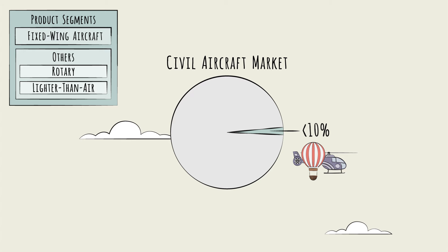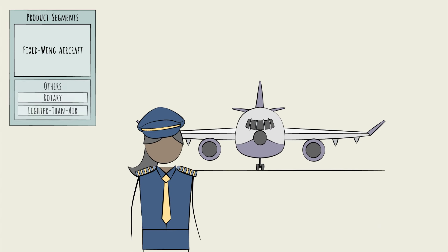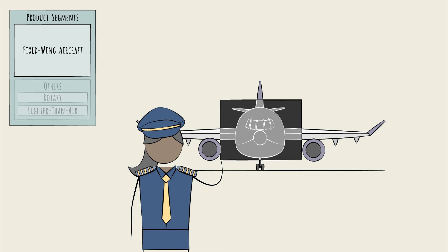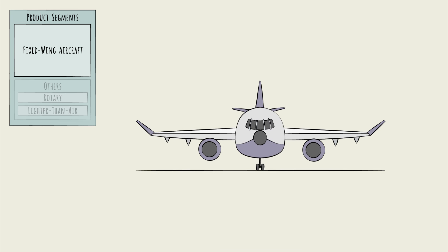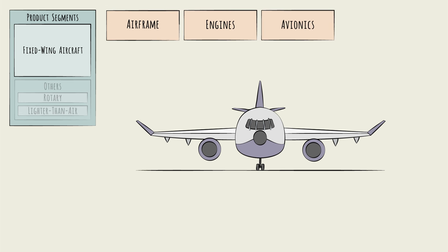Before we launch into the differences that define the various fixed-wing sub-segments, let's say a word or two about what makes planes, planes. All fixed-wing aircraft have a few key common component systems: the airframe, the engines, the avionics, and the interiors.